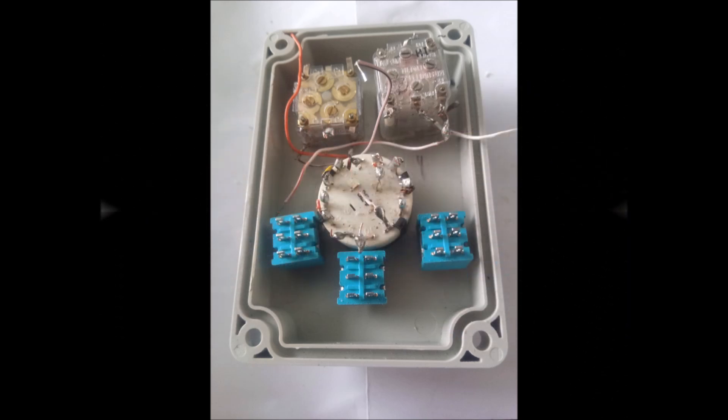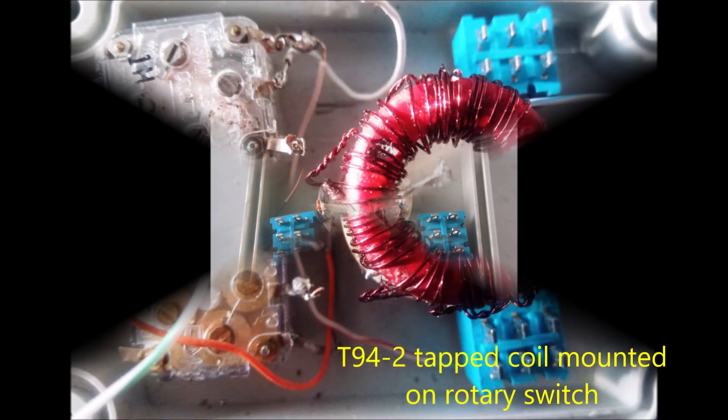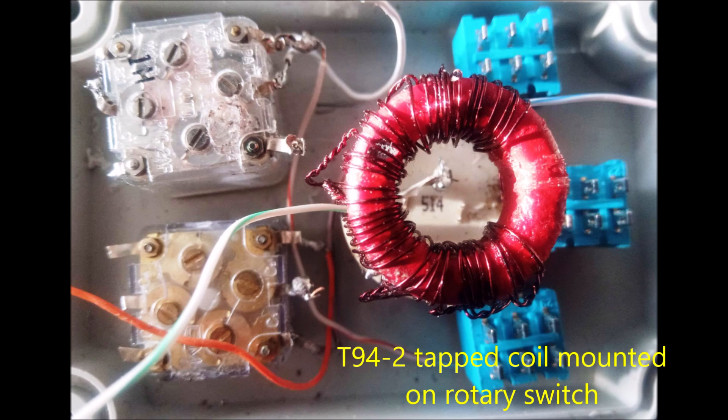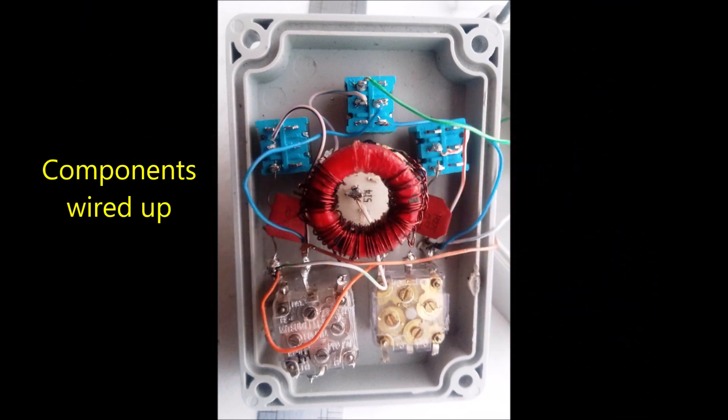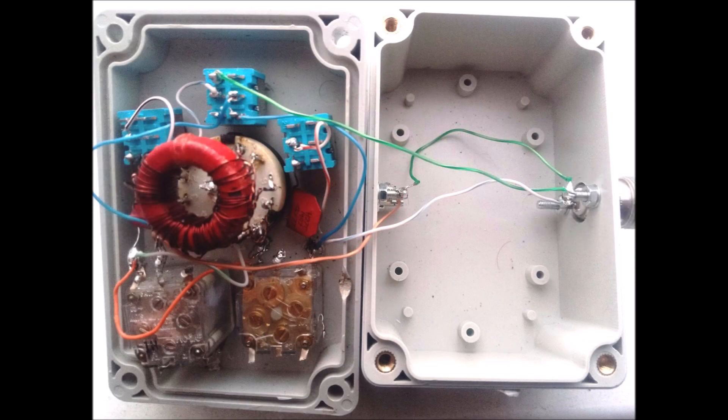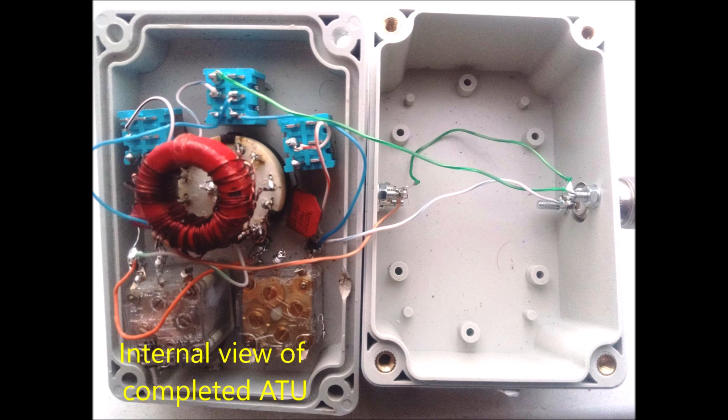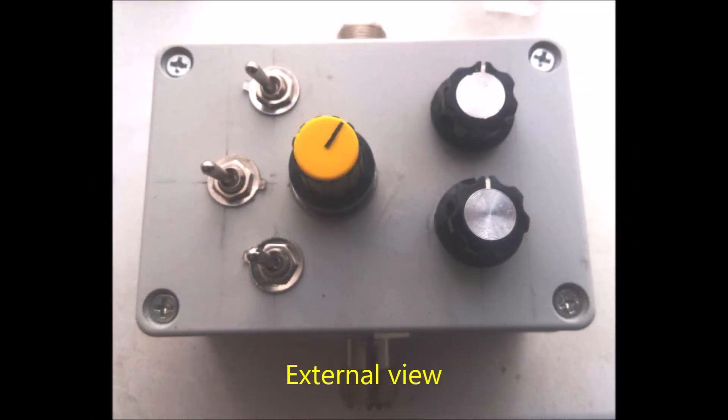The next one here shows the components mounted in the box and ready to be wired up. There's the tapped coil, more details of that later, and it's tappable for various inductances. There's everything wired up and ready to go for testing, and there's just the complete project showing the bottom half as well with the SO239 sockets for the input and output.